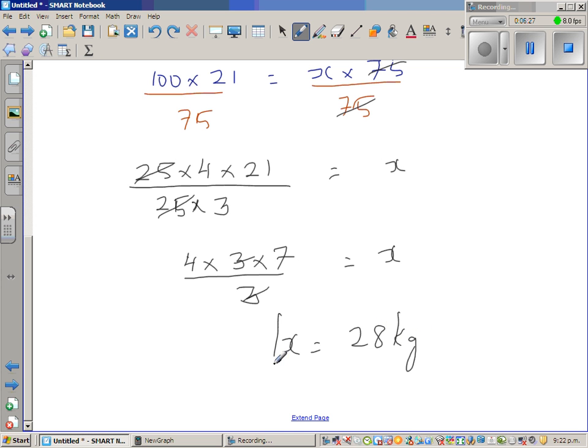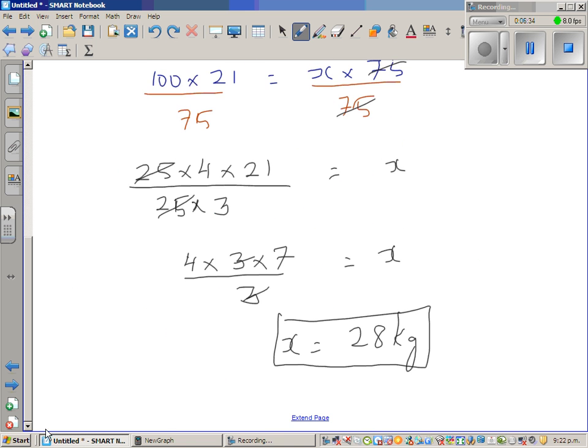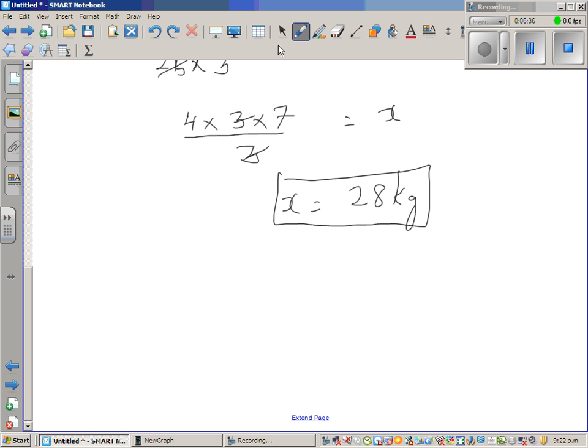So he started with 28 kgs, and then he found it was too heavy. So let's check our answer. Does the answer make sense? And that's one question you should always ask once you get the answer. This is the checking, and this is the most vital part of learning. So he started with 28 kgs. He reduced 25%. And the question is, it says it had 21 kgs.